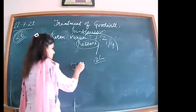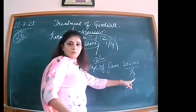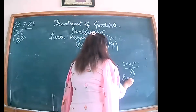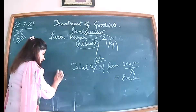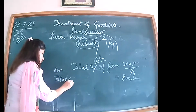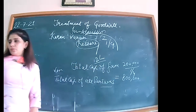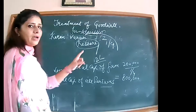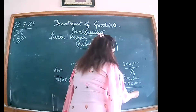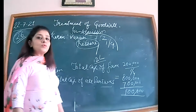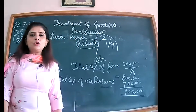Kishore brings 2 lakh for 1/4 share, so total capital of the firm = 2 lakh × 4 = 8 lakh. Actual total capital of all partners including new = Karan's 2 lakh + Varun's 3 lakh + Kishore's 2 lakh = 7 lakh. Since the firm's capital should be 8 lakh but is only 7 lakh, the hidden goodwill = 8 lakh minus 7 lakh = 1 lakh. The formula: total capital based on incoming partner minus total capital of all partners including new = firm's goodwill.